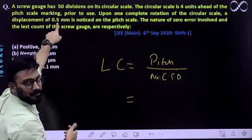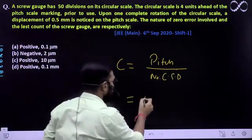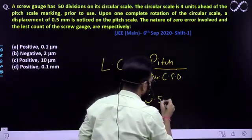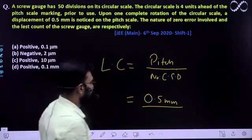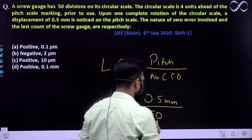One complete rotation of a circular scale jab hota hai, to displacement kitni ho rahi hai? 0.5 mm ki. To pitch aapka 0.5 mm de rakha hai. Circular scale divisions to already 50 ki hai, to hum yaha pe asani se 50 laga denge, to least count aa jayega.